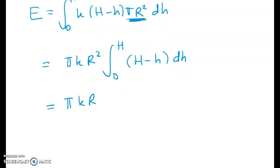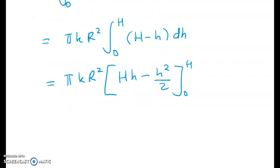But this is a very easy level two integral now. So we've got big H times h minus h squared on two evaluated at those limits.